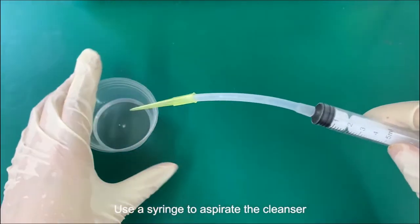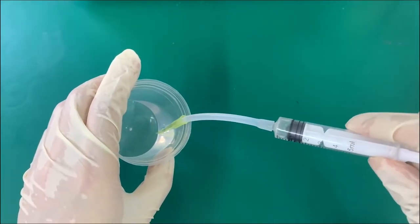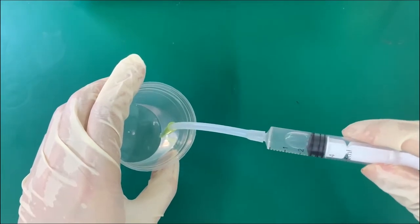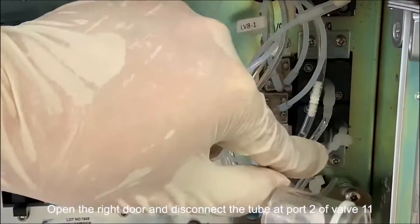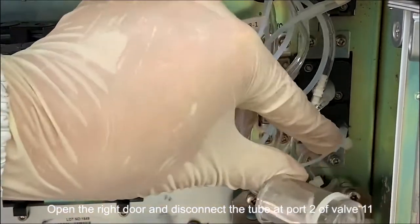Use a syringe to aspirate the cleanser. Open the right door and disconnect the tube at port 2 of valve 11.